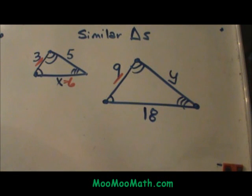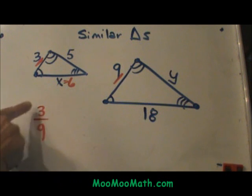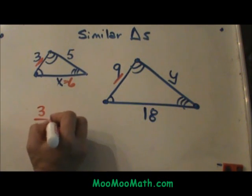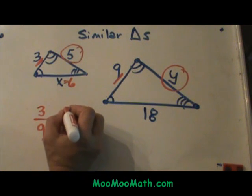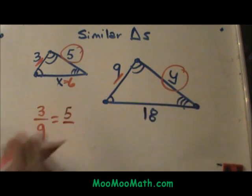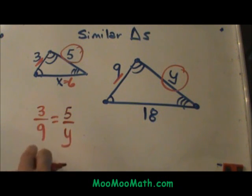I'm going to use the same pairing, the 3 and the 9, because I was given those two sides. 3 over 9, so the small triangle over the larger triangle. Now I need to solve for y this time. Well, it corresponds to the 5, but the 5 is part of the small triangle, so it goes on top, and y is part of the larger triangle, so it goes on bottom.